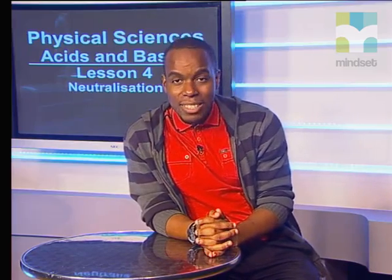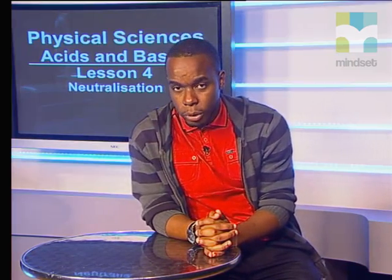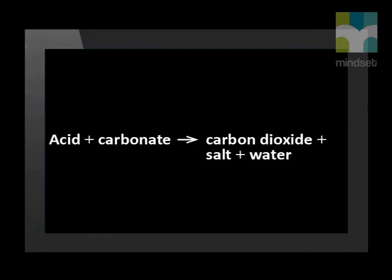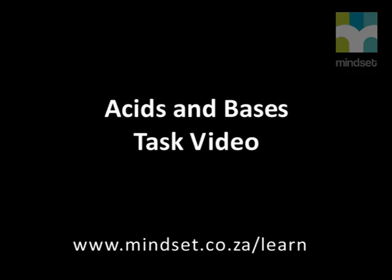What will be the products if the acid reacts with a base which is a carbonate, like calcium carbonate? A dilute hydrochloric acid reacts with calcium carbonate in solid form. The reaction yields carbon dioxide, calcium chloride, and water. When an acid reacts with a base which is a carbonate, the products will be carbon dioxide, salt, and water. This brings us to the end of our lesson, Grade 12s. You will also find more information about acids and bases at www.mindset.co.za/learn. Remember to try some of the questions in the task video too.